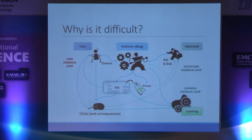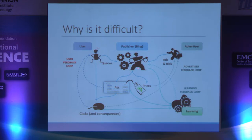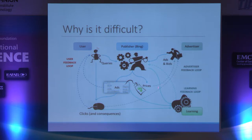If you change the algorithms that decide which ads are shown, you have a lot of consequences that are not so simple. There is a direct consequence that you change the ads that are shown, therefore you change the ads that can be clicked, therefore you change the data that's collected and used for the learning algorithms that define how the system is working. But you also have a lot of other effects on a different time scale.